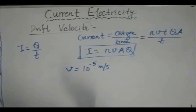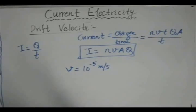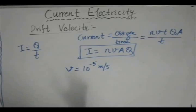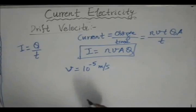As we observed, whenever we switch the bulb on, it glows almost instantaneously. So how does this happen if the drift speed of the electron is too slow? The reason why we observe almost no delay is because the free electrons are present everywhere on the conductor.